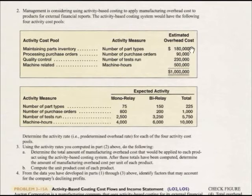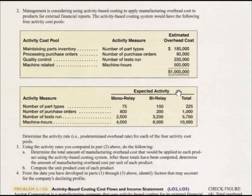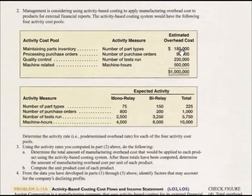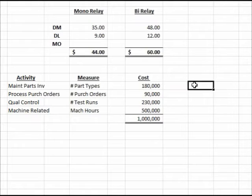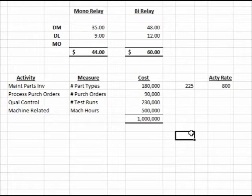We compute a predetermined overhead rate for each individual activity. For maintaining parts inventory, we have $180,000 in cost and a total of 225 part types, giving us $800 per part type. For processing purchase orders, $90,000 divided by 1,000 total purchase orders gives us $90 per purchase order.